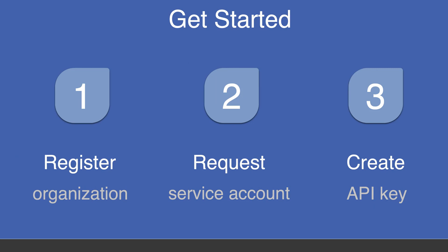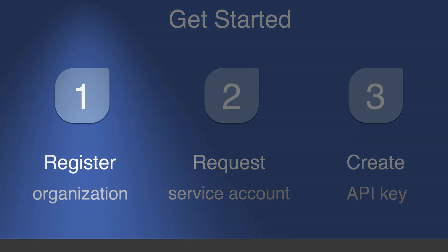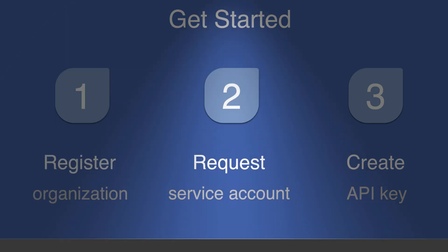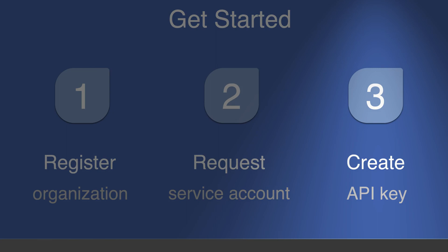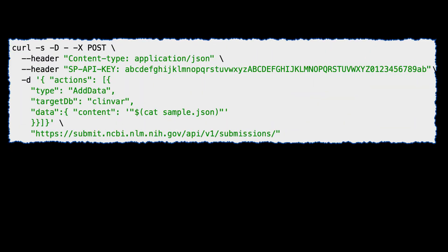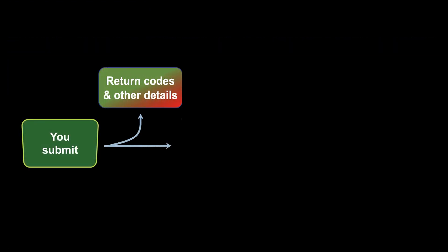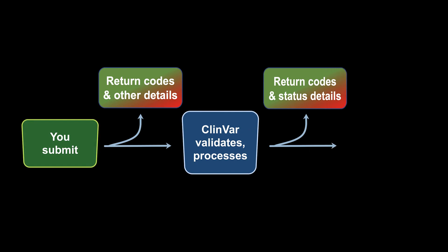Getting started with the API requires a few one-time activities: registering your organization if not already registered, requesting a service account, and creating an API key. The API uses JSON format for messaging at two key points — first in response to data submission, then again when checking the status of your submission.